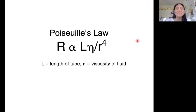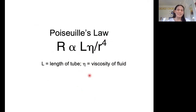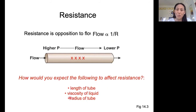Those concepts are embodied in an equation called Poiseuille's Law. Resistance is proportional to the length of the tube times the viscosity of the fluid (eta), divided by the radius of the tube to the fourth power. I don't actually expect you to know this equation, but I do want you to understand this mathematical relationship conceptually. If you can answer these questions conceptually, that will make me happy.